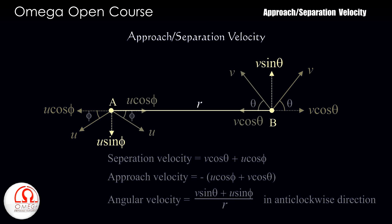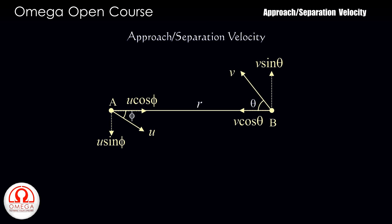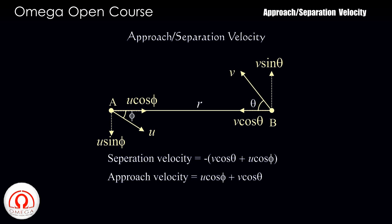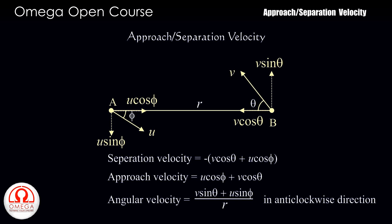Finally, if we switch the direction of velocity of A as shown, then the radial components of velocity of both particles are directed toward each other. Hence the separation speed is minus V cos theta plus U cos phi, while the approach speed is U cos phi plus V cos theta. The angular speed of B with respect to A in this case is (V sin theta plus U sin phi) divided by R in the anti-clockwise direction.